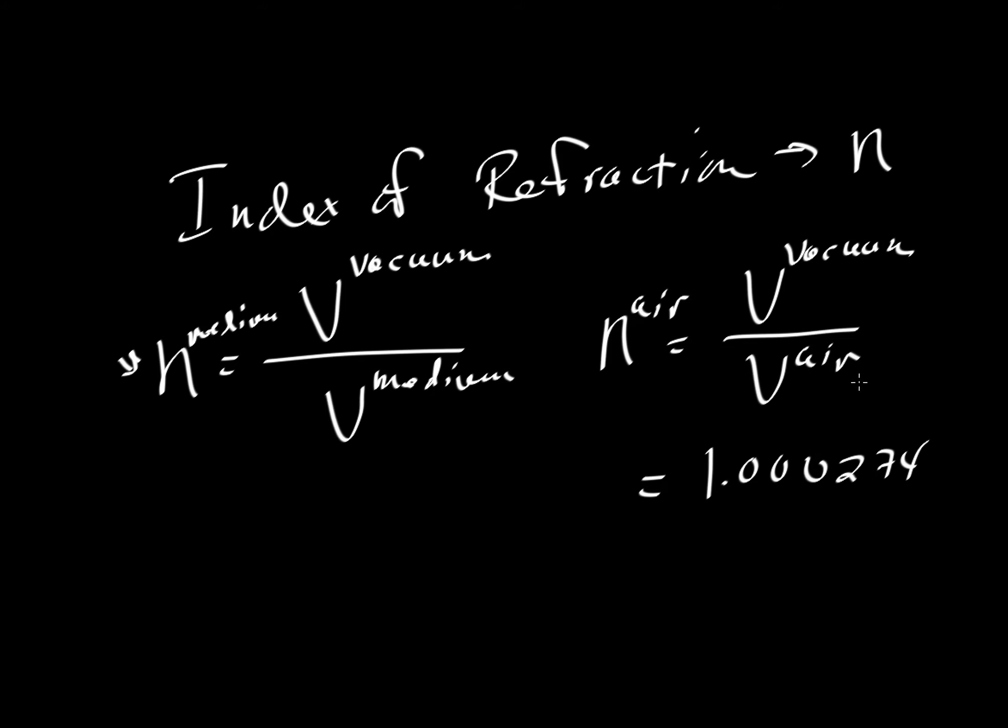But because it's so close to 1, you could see that these velocities are very close to one another. So the velocity of air is almost the same as a vacuum. Also note that this ratio can never be less than 1. This ratio, whatever it is, is always going to be greater than 1.